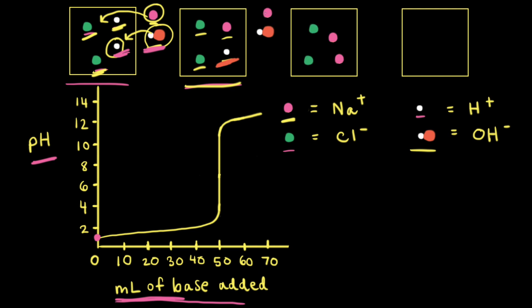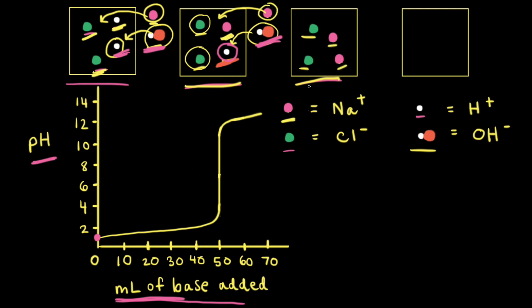Next we add some more sodium hydroxide — a sodium cation and a hydroxide anion. The added hydroxide anion is neutralized by the remaining H⁺ ion; they form water, which we leave out of the particulate diagram. In the third particulate diagram we see two chloride anions and two sodium cations. This third particulate diagram represents the equivalence point of our titration — all of the acid initially present has been neutralized by the added base, and we're left with an aqueous solution of sodium chloride.